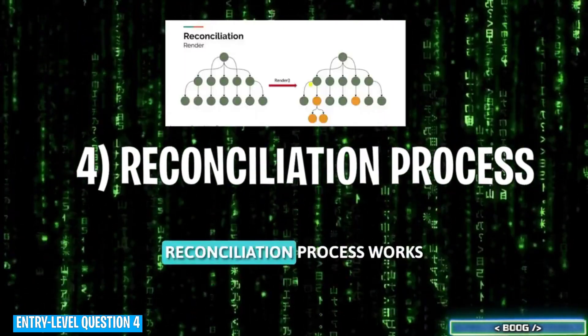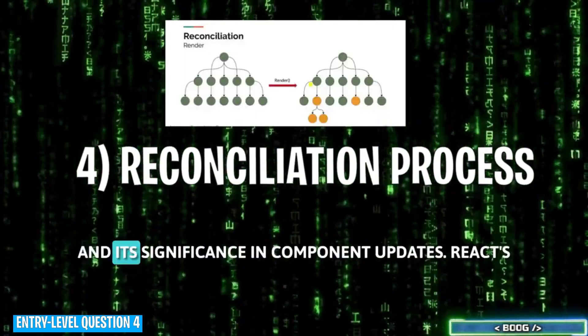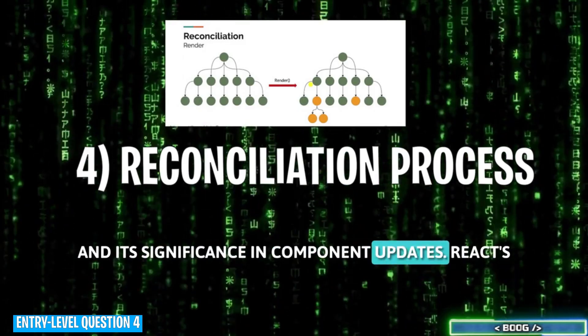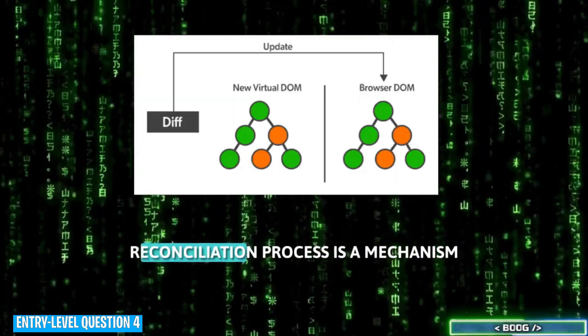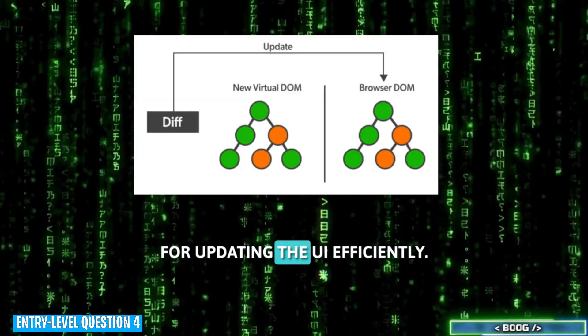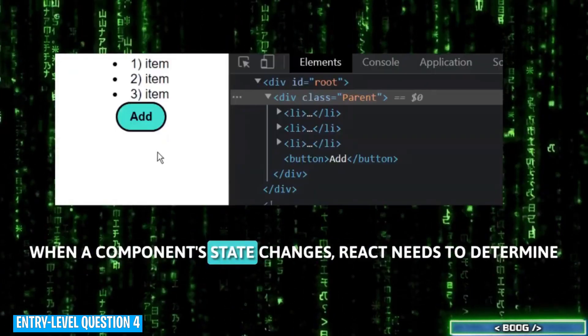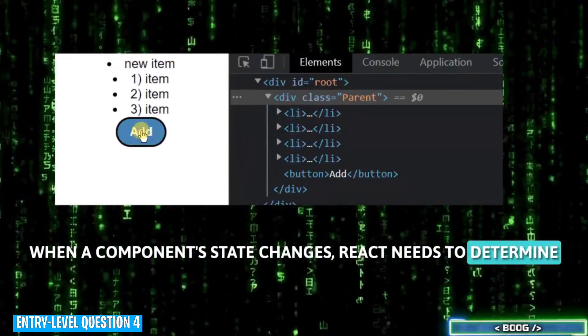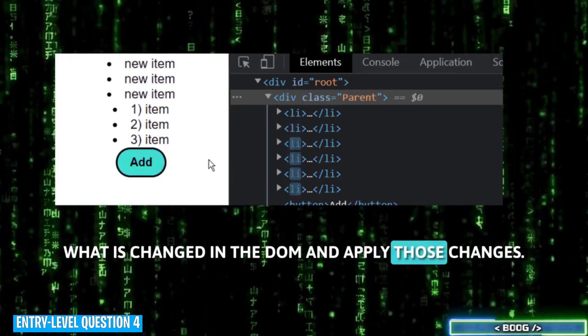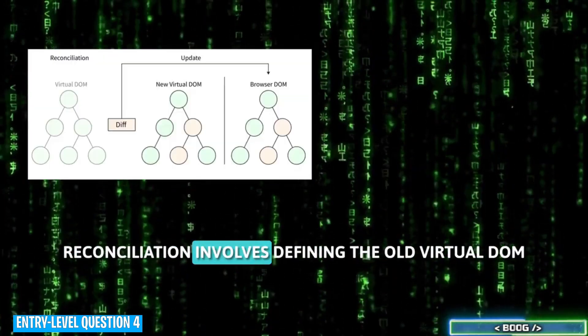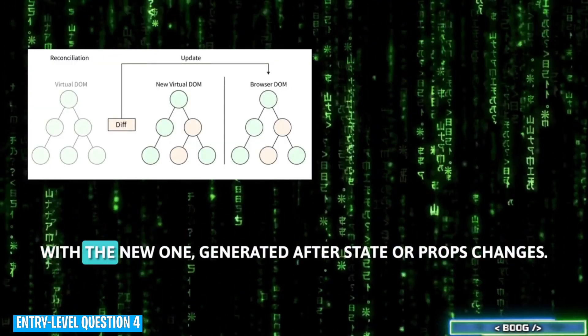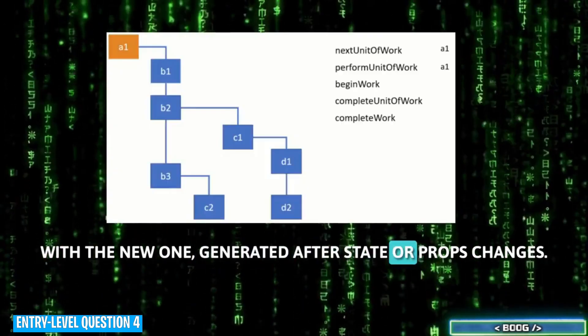Question 4. Describe how React's reconciliation process works and its significance in component updates. React's reconciliation process is a mechanism for updating the UI efficiently. When a component state changes, React needs to determine what has changed in the DOM and apply those changes. Reconciliation involves diffing the old virtual DOM with the new one, generated after state or props changes.